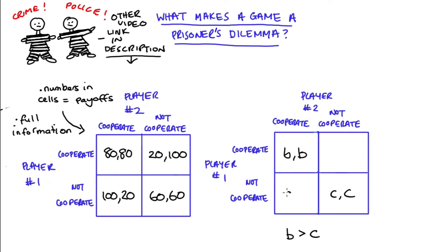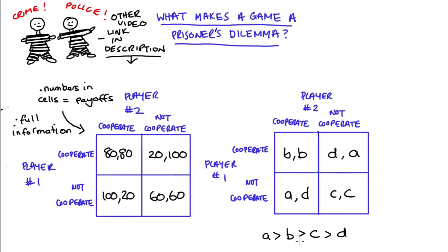Where player one doesn't cooperate but player two does, player one gets the highest possible payoff a, where a is greater than b and c, but player two gets the lowest payoff d, which is lower than a, b, and c. In the opposite cell, player one gets d and player two gets a. So the right-hand matrix is an abstract presentation: any numbers standing in for a, b, c, and d that meet these inequalities will give you a classic prisoner's dilemma.